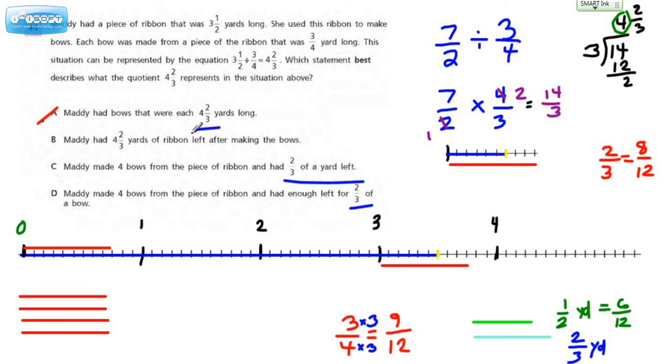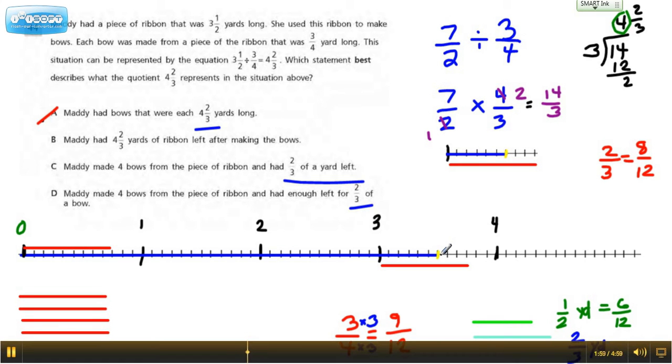Maddie had 4⅔ yards of ribbon left after making the bows. Now if she's starting out with this and breaking them up into equal groups, how can she have more than what she started out with? That just doesn't make sense. Let's cross that one out.